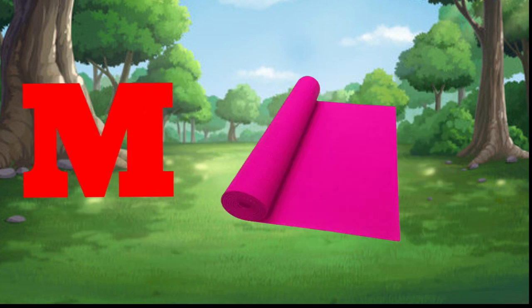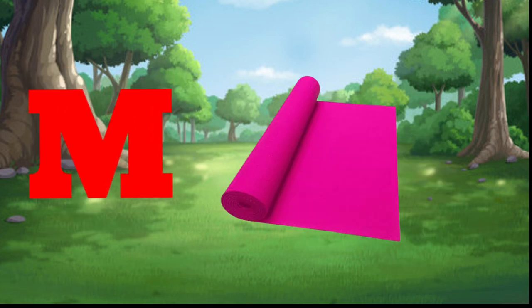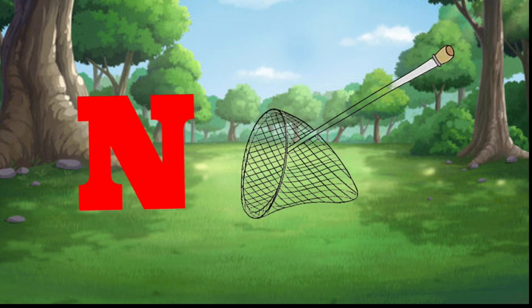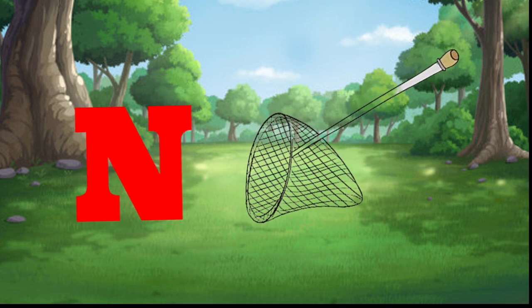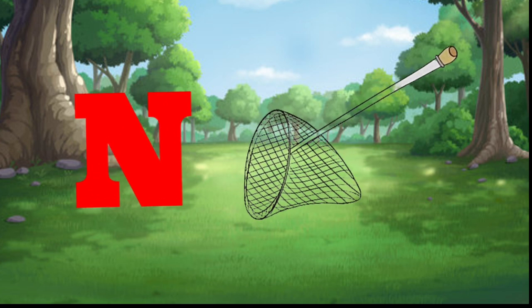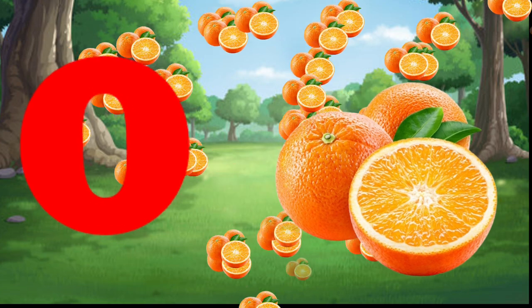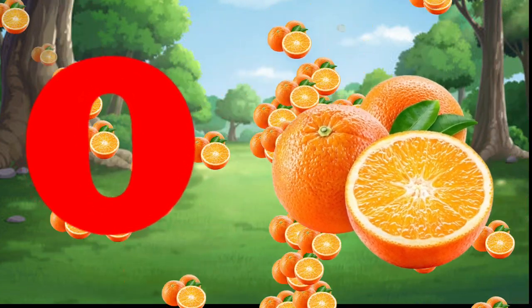M is for mat, m-m-mat. N is for net, n-n-net. O is for orange, o-o-orange.